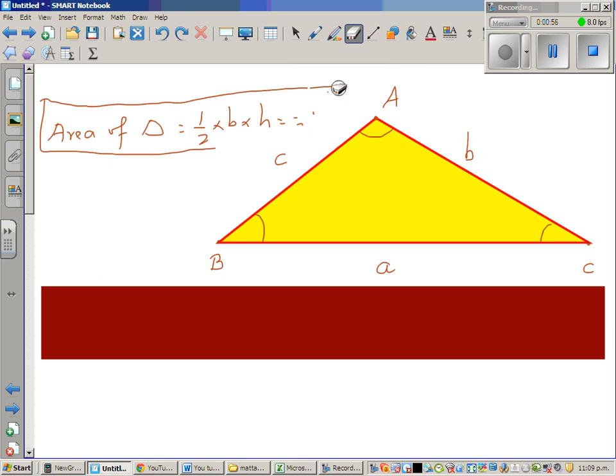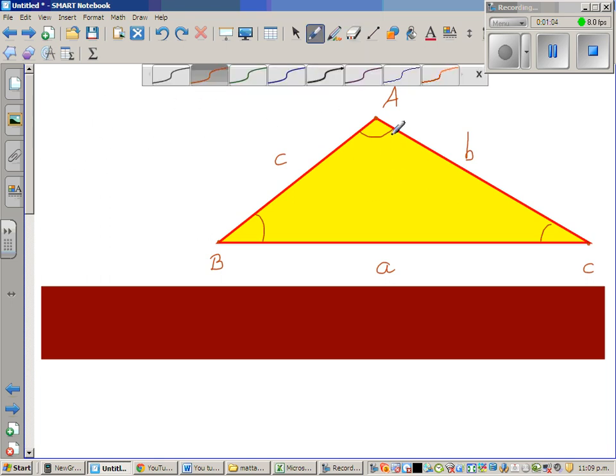So this is a triangle ABC, where the sides opposite to, say, angle A, this BC, line segment BC is denoted by letter a. This is a convention that lowercase a is the side opposite to angle A, which is the capital letter A.